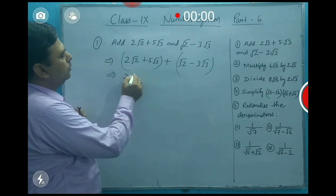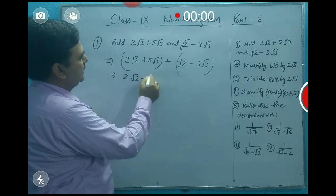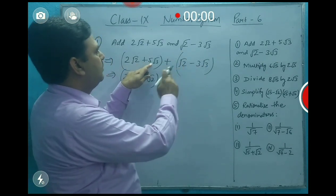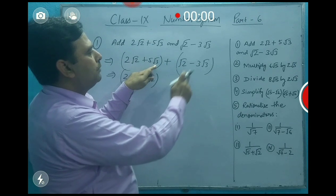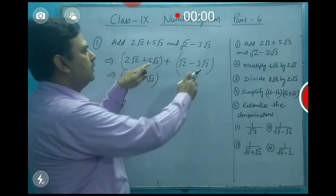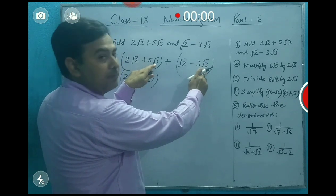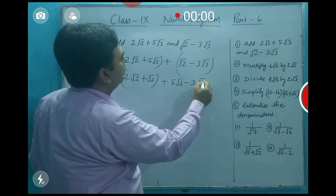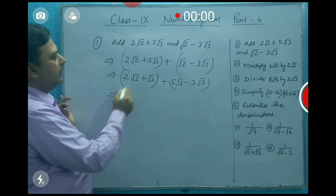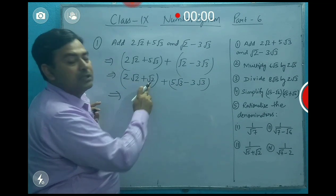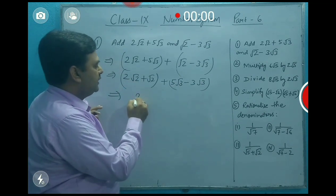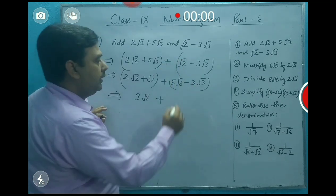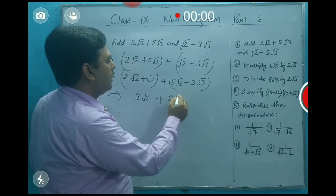So the same type: √2 and √2 go in one bracket, and in another bracket we have 5√3 and 3√3, because they share the same square root number. Now adding: 2√2 + √2 gives 3√2, and similarly 5√3 - 3√3 gives 2√3. So the final answer is 3√2 + 2√3.